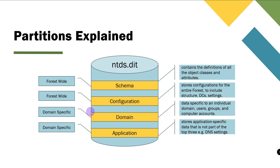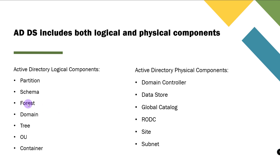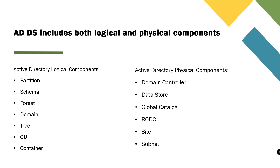Now that you understand the AD structure, let's talk about the forest — basically a collection of one or more domains that share a common root, a common schema, and a common global catalog. The domain tree is a hierarchical collection that shares the same common root domain or namespace configured within that forest.